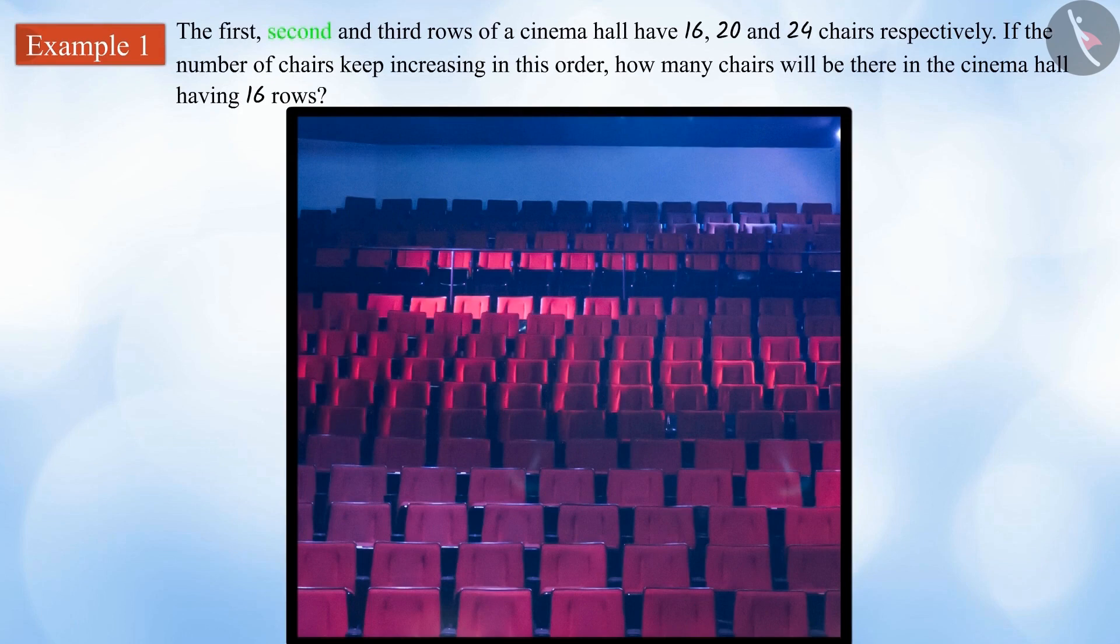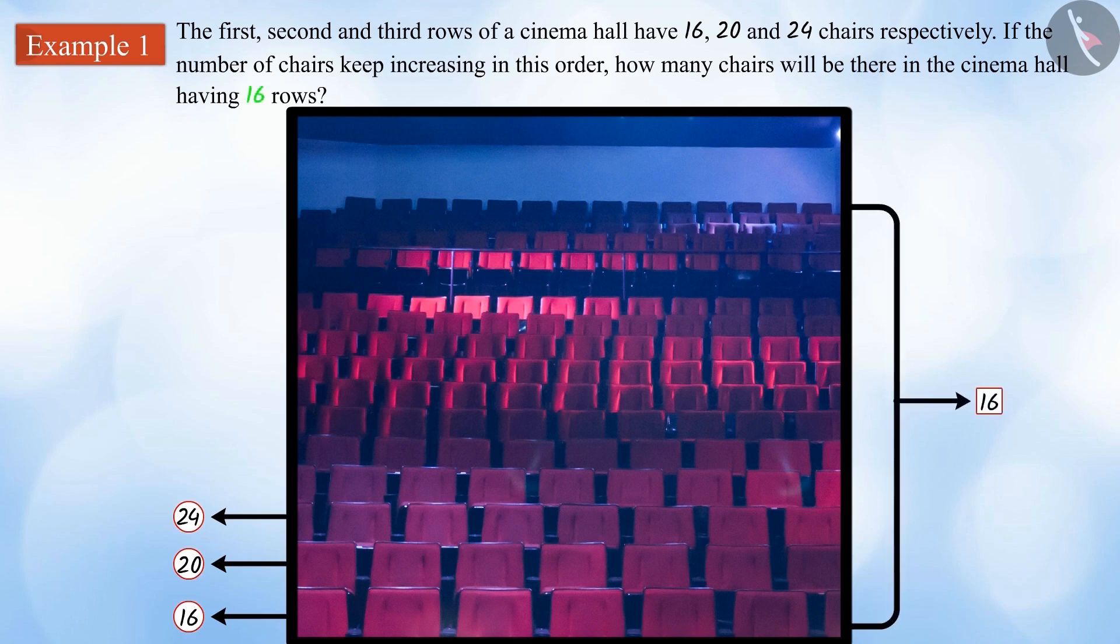The first, second and third rows of a cinema hall have 16, 20 and 24 chairs respectively. If the number of chairs keep increasing in this order, how many chairs will be there in the cinema hall having 16 rows?